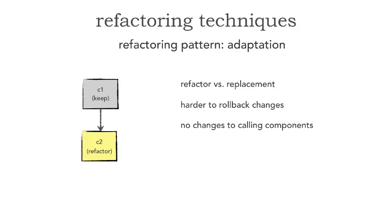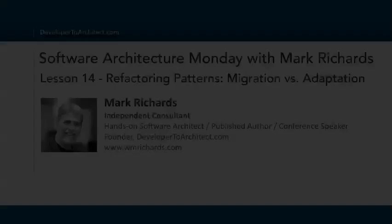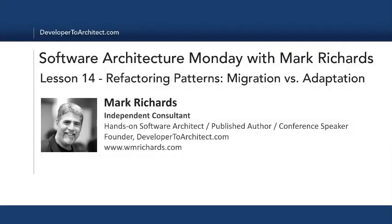So really, the choice between migration versus adaptation comes down to risk, cost, and the coupling levels that we have. If we're replatforming, we'll generally have to do a migration because it's hard to replace an existing component with a new platform or language. This has been Software Architecture Monday, Lesson 14 — Refactoring Patterns — covering some of the key differences between two ways of refactoring systems and components. Please stay tuned every Monday for a new lesson. Thank you so much.